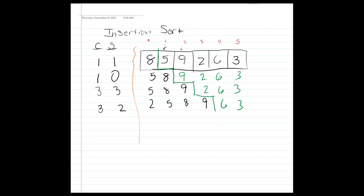To clarify: comparing six to nine — yes, swap; comparing six to eight — yes, swap; comparing six to five — no swap. Six moved from position four to position two, which corresponds to the two swaps required. Our sorted array is now two, five, six, eight, and nine.